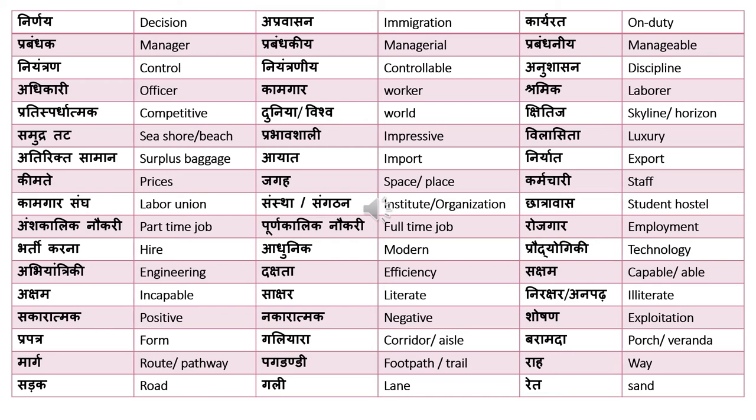'Adhunik' means modern. 'Pradyogiki' means technology. 'Abhiyantri ki' means engineering. 'Dakshata' means efficiency — for example, 'he is a very efficient person' is 'woh bohat daksh insan hai.' 'Saksham' means capable or able, while 'aksham' means incapable or unable — so these are antonyms of each other.